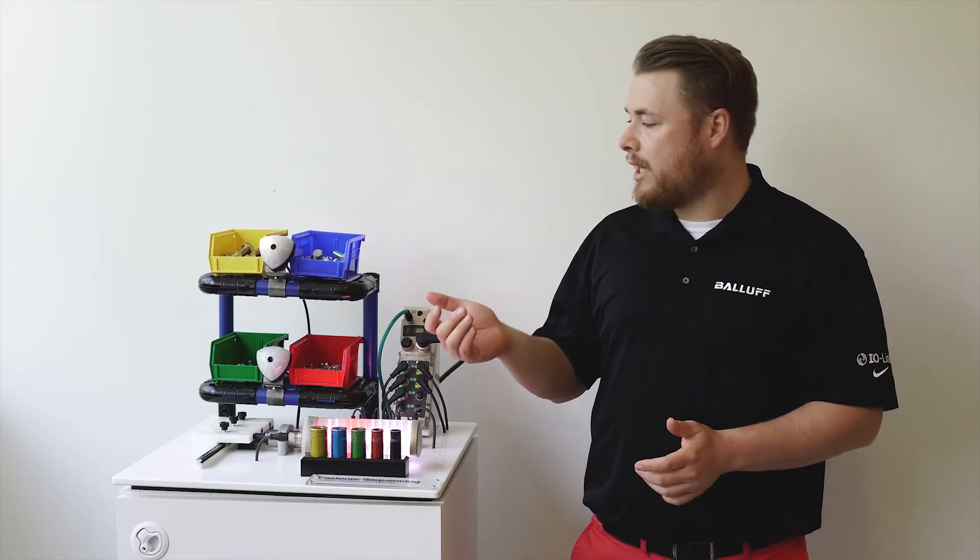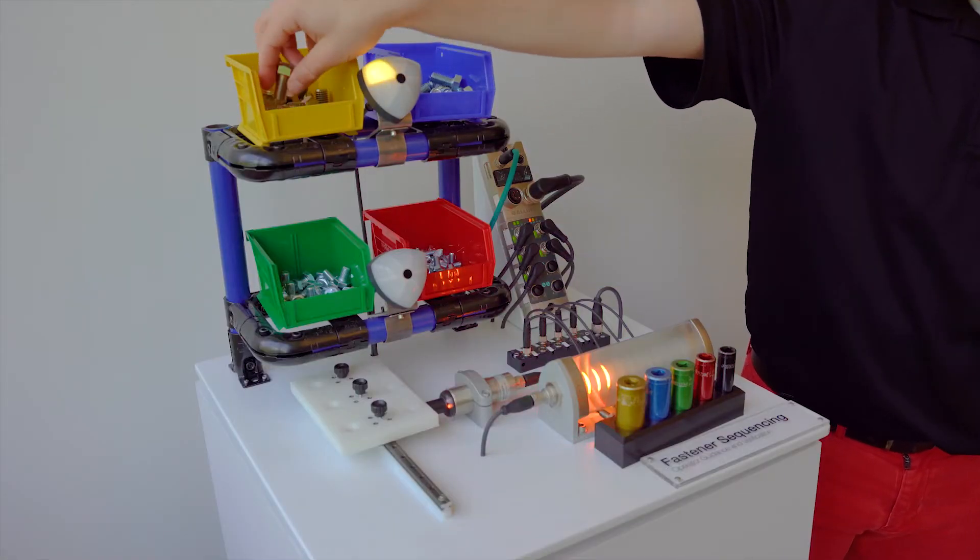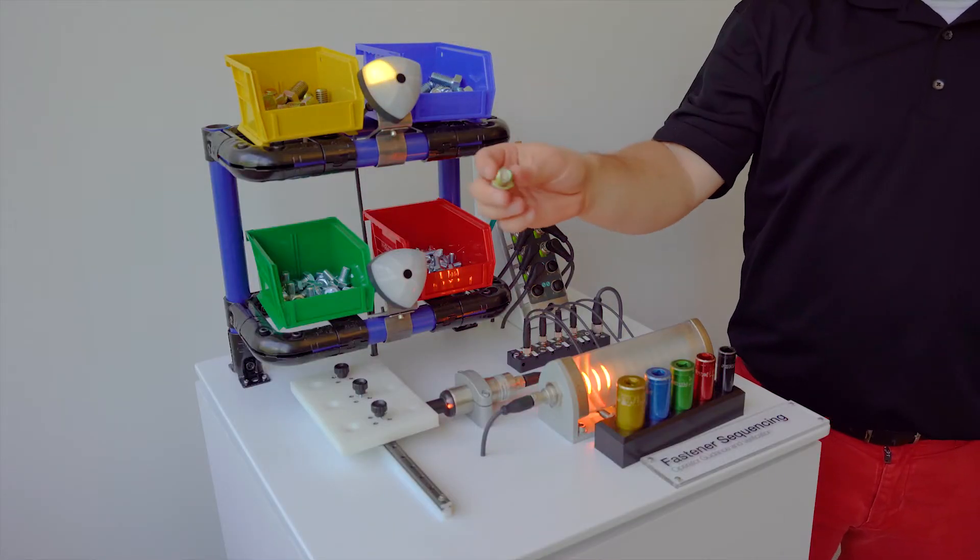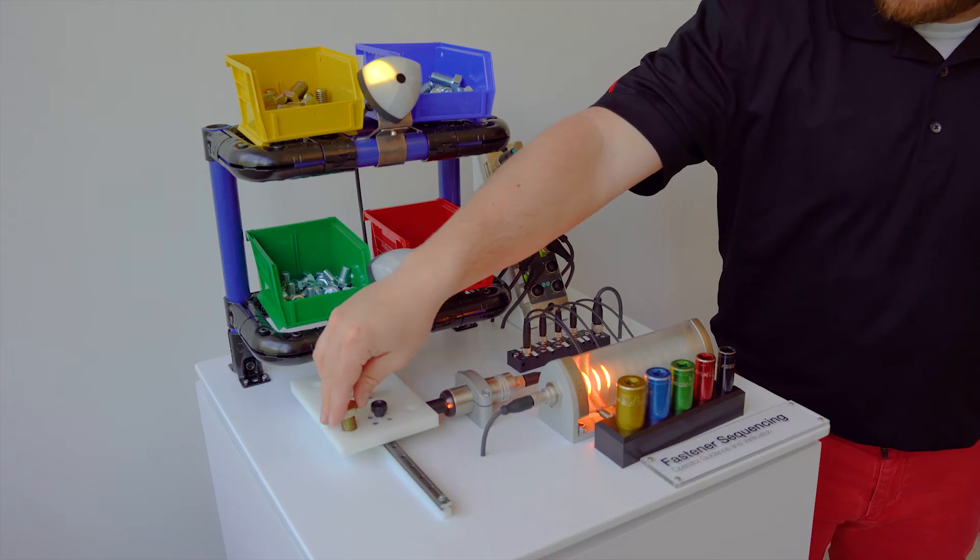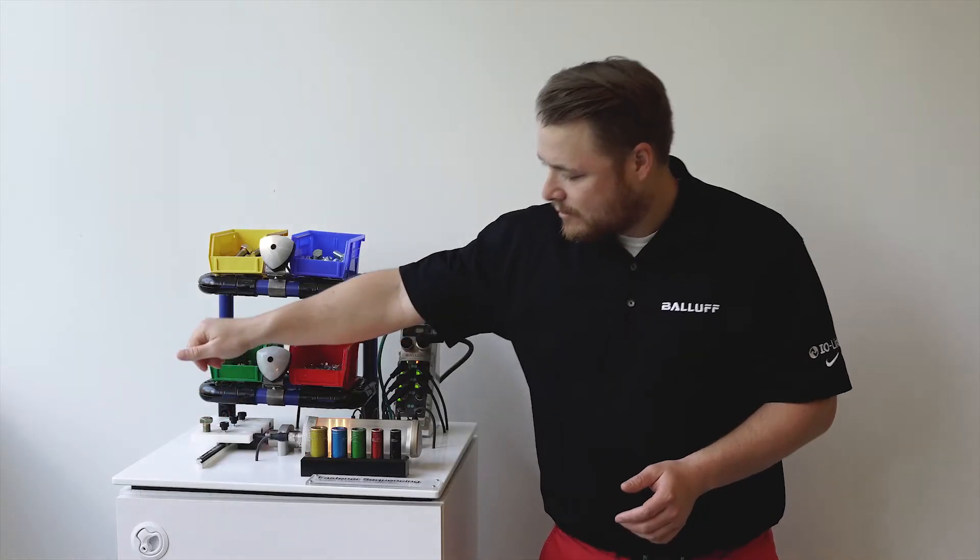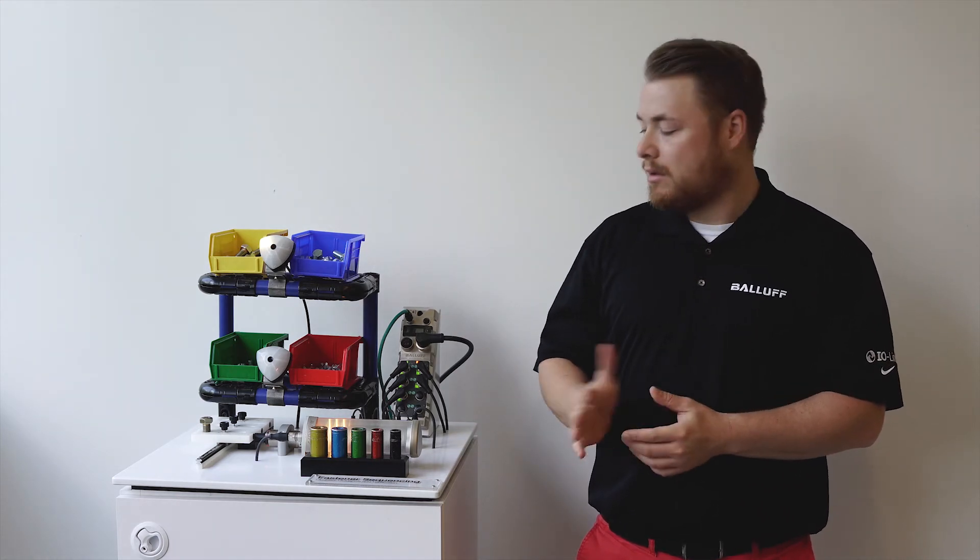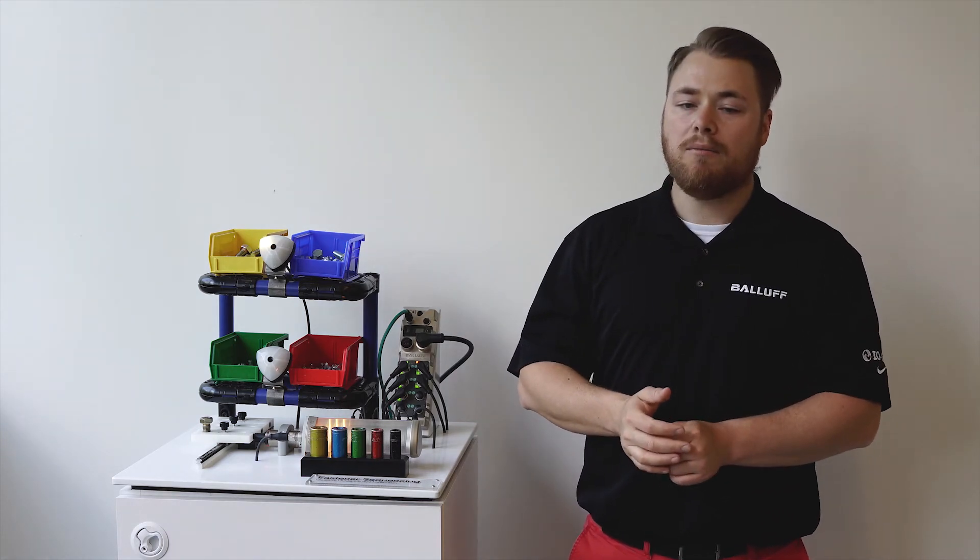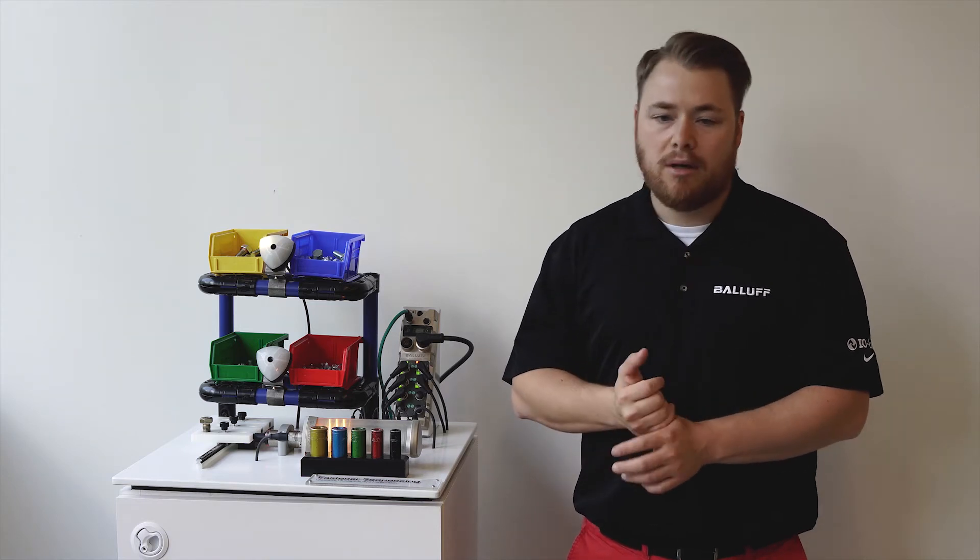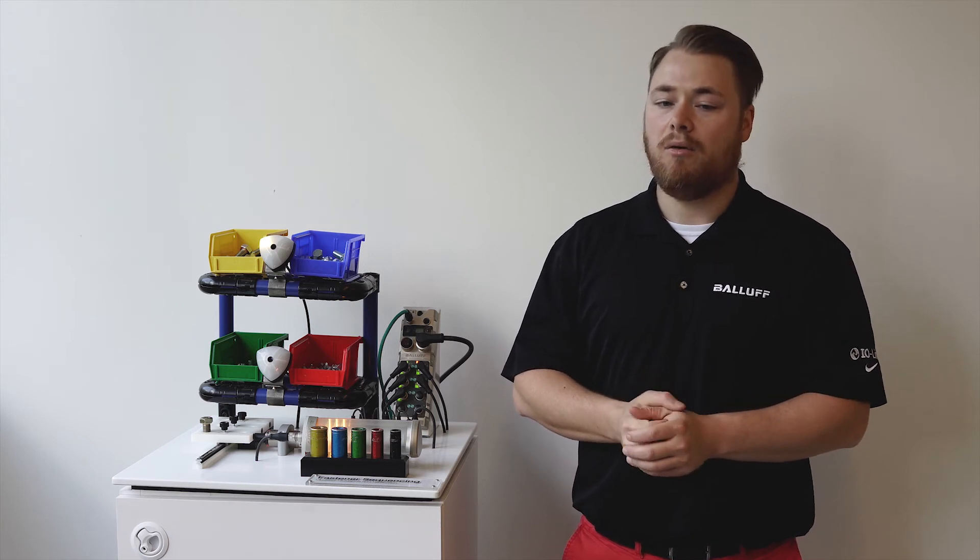As I go to pick up the screw from the bin, the photoelectric sensor senses my hand, and I will set this into the pallet and give it a couple of turns. After I have started to screw that into the appropriate hole, now I'm going to look to the smart light tower to let me know which socket I need to grab in order to finish fastening it into the hole.